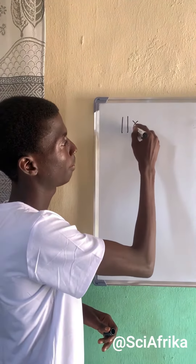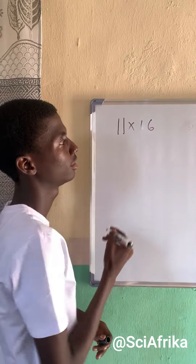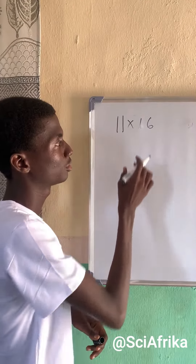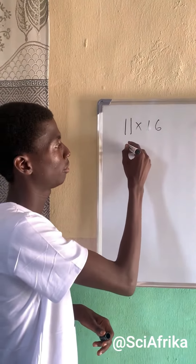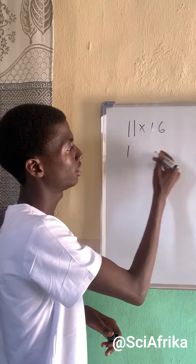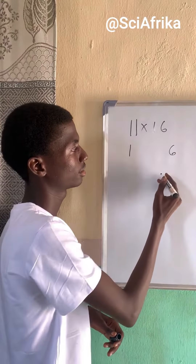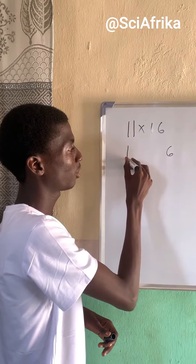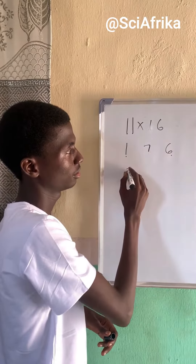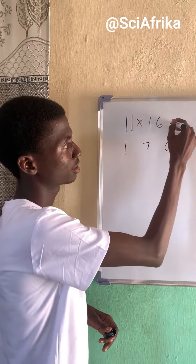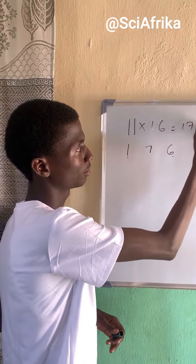It's 11 times 16. We need to remember that one. I would write 1, and write 6. Then add 1 plus 6, and the result is 7. So, 11 times 16 will give us 176.